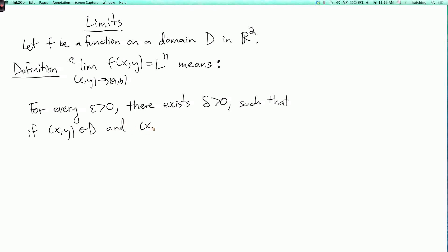and (x,y) ≠ (a,b), and the distance from (x,y) to (a,b) is less than δ. So the formula for that is √((x-a)² + (y-b)²) < δ.